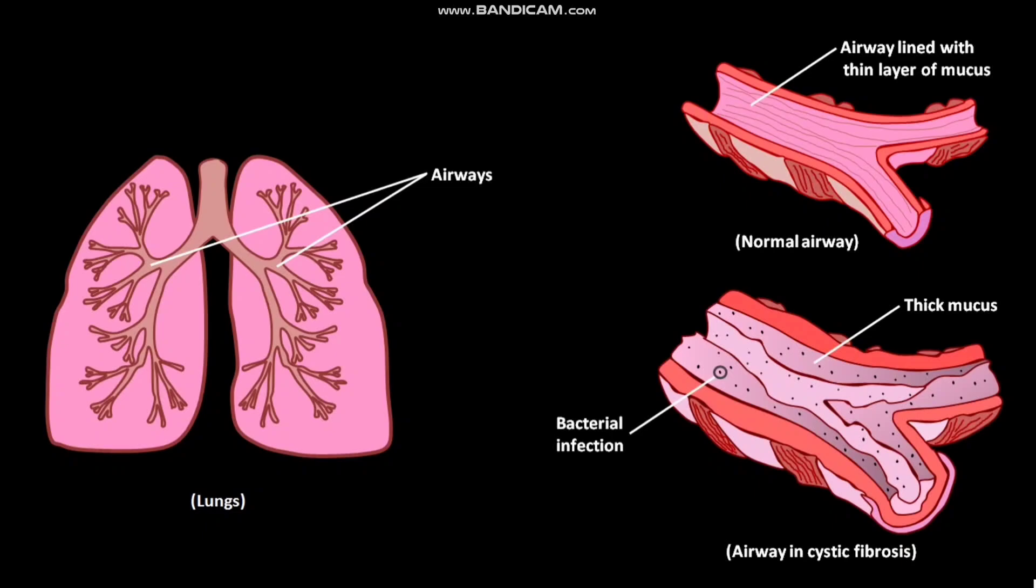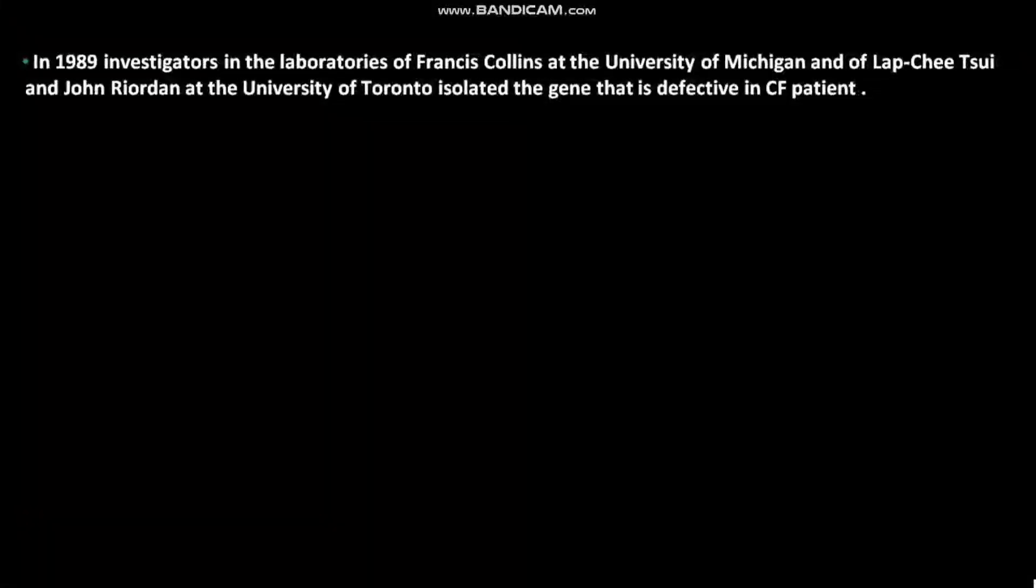In 1989, investigators in the laboratories of Francis Collins at the University of Michigan and of Lap-Chee Tsui and John Riordan at the University of Toronto isolated the gene that is defective in CF patients. This gene encodes the CFTR protein.